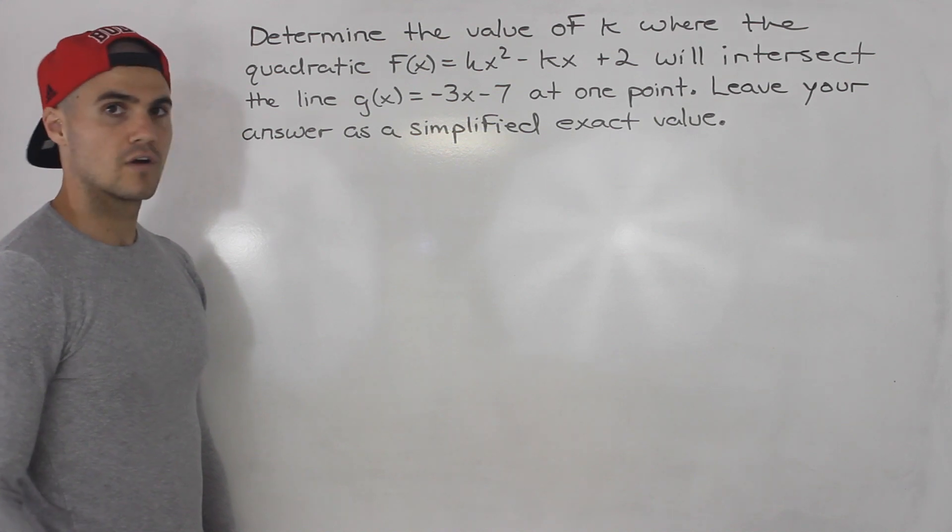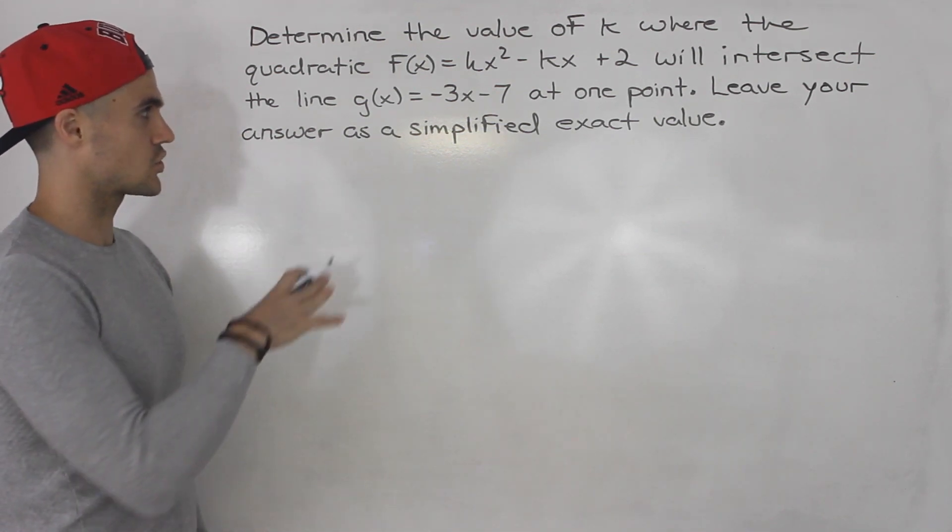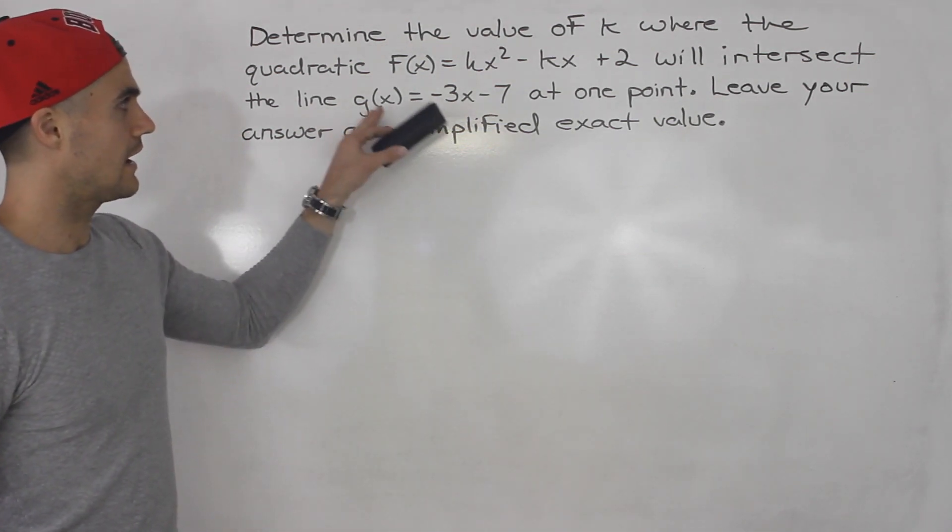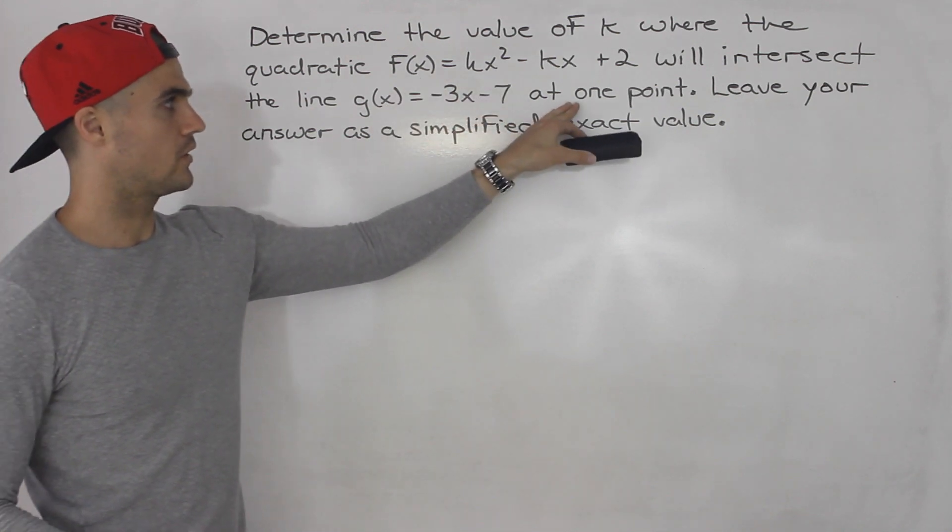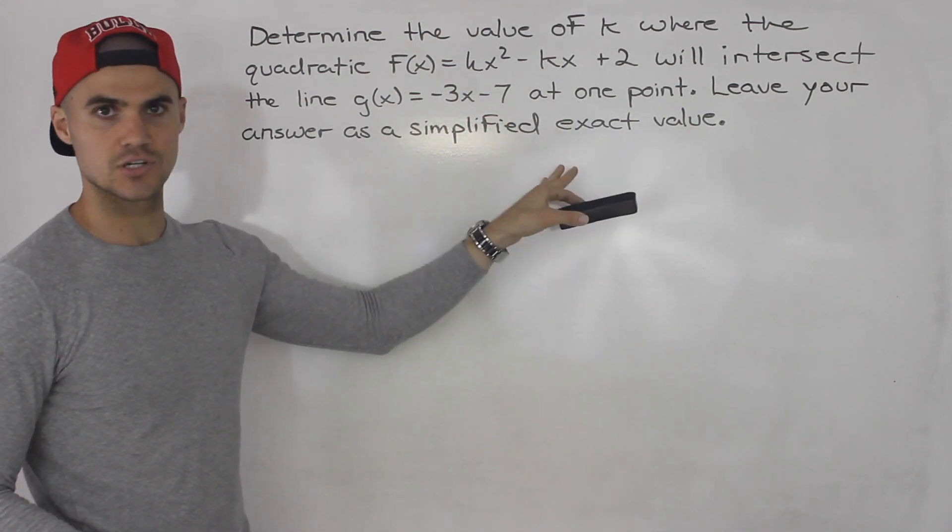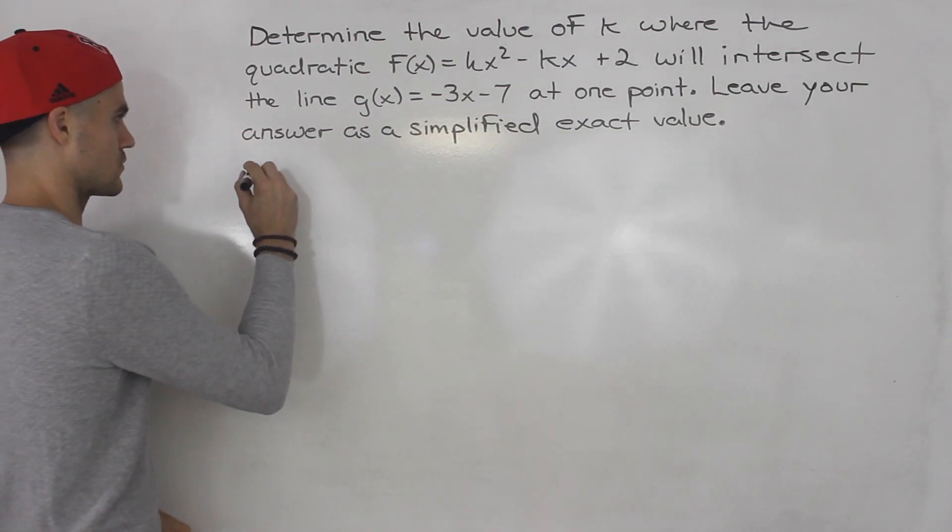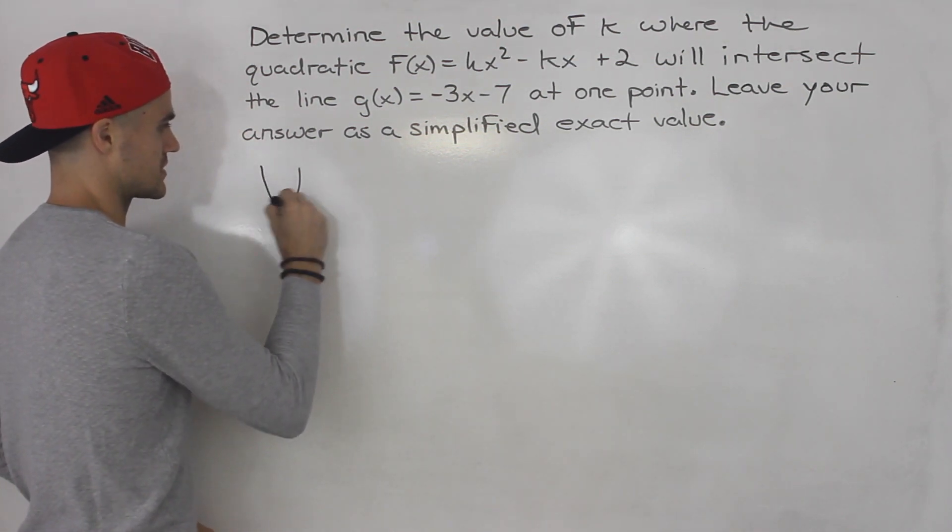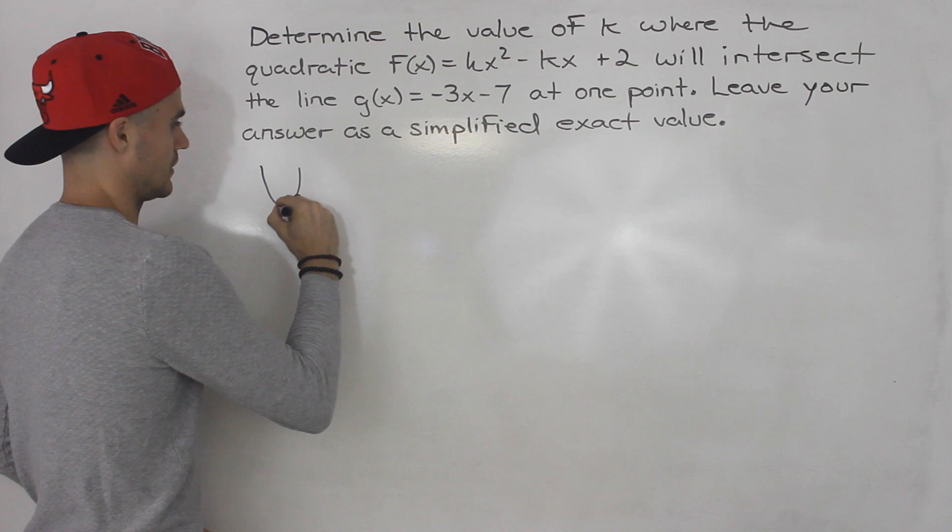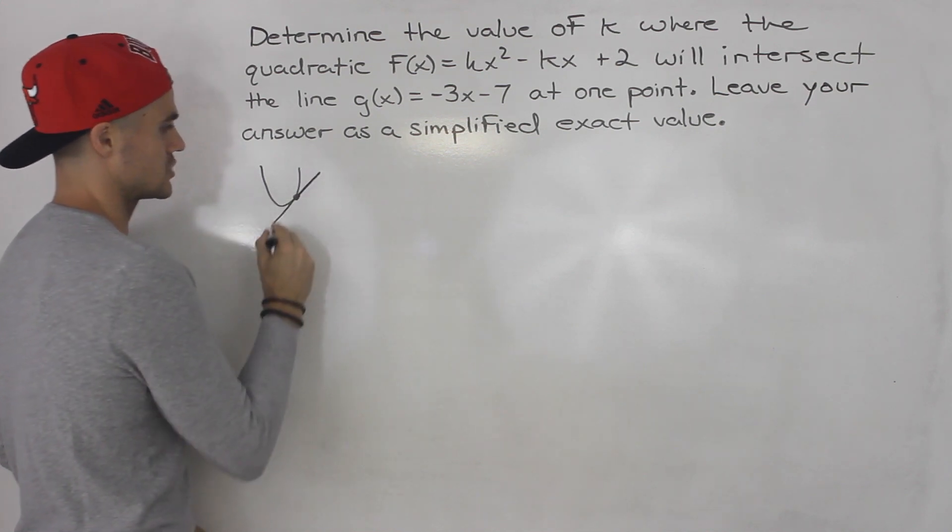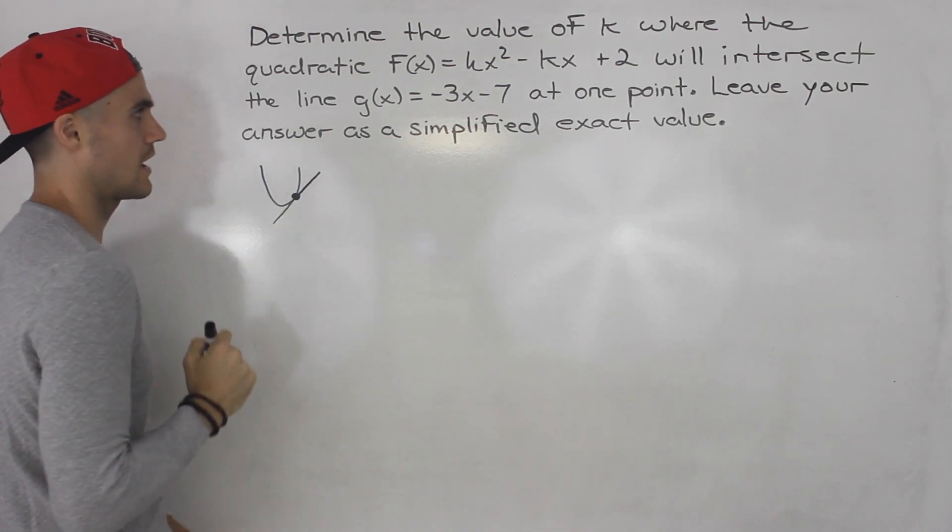Now, if you remember from the lecture videos, we did a bunch of questions like this. When a line intersects a quadratic at one point, it means that it's tangent to the quadratic. If this is the quadratic, then we have a line here that is tangent to it, so it intersects it at one point.